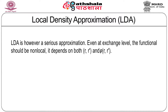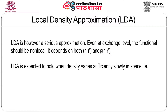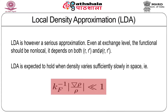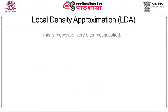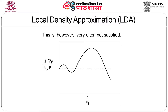LDA is, however, a serious approximation. Even at the exchange level, the functional should be non-local, that is, it should depend on both r and r' and rho(r) and rho(r'). LDA is expected to hold good when the density varies sufficiently slowly in space, expressed as k_F^{-1} |∇rho/rho| much less than 1, where k_F is the Fermi wave vector. This condition is, however, very often not satisfied, as shown schematically in a figure of the exact charge density for bulk copper, which is hardly anything slowly varying.